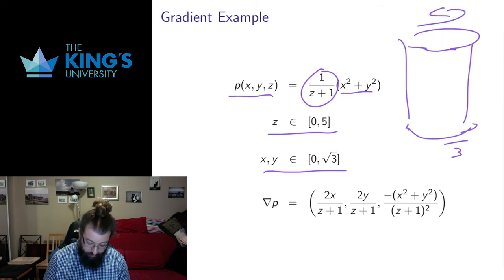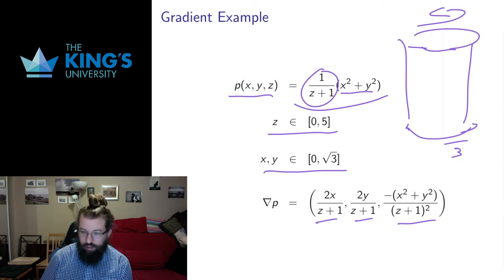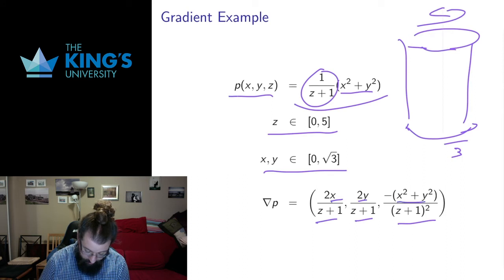So I can calculate the gradient of this thing. Take the partial derivative in x, partial derivative in y, partial derivative in z. I've skipped those calculations. But feel free to check them. And I can look at where this gradient points. And this gradient is going to be pointing outward in x and y, and downward in z. So it's going to be pointing in these kind of directions.